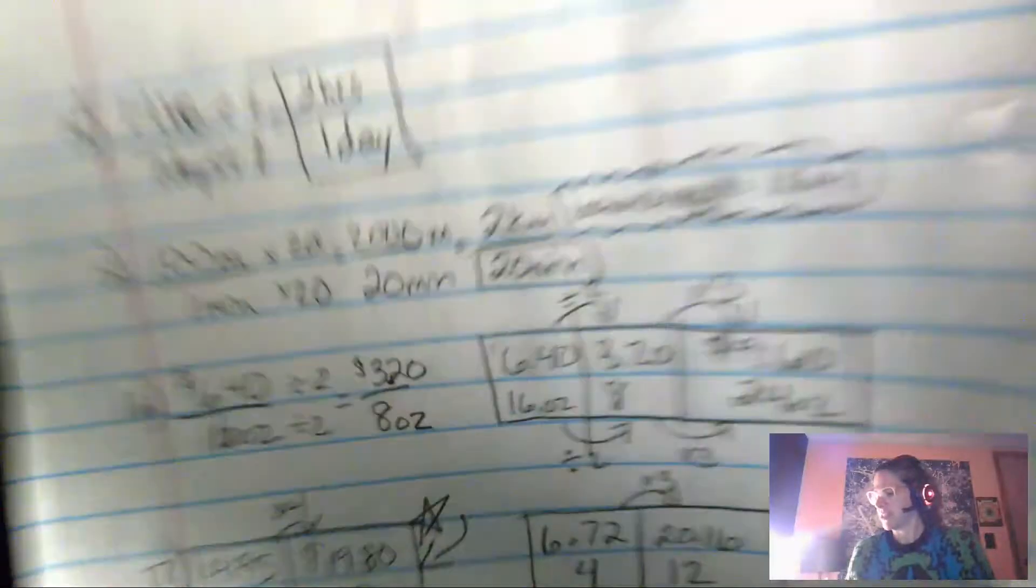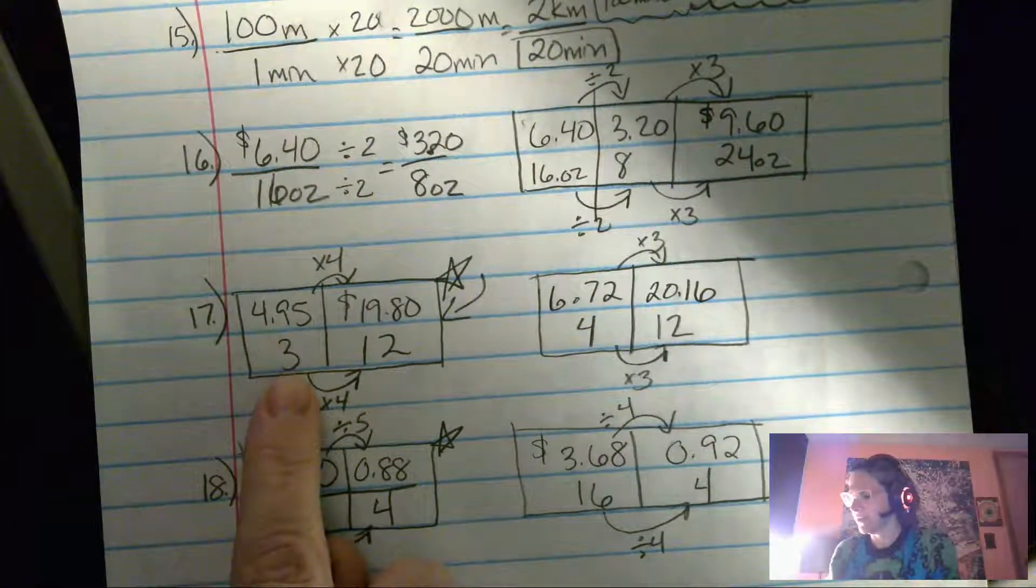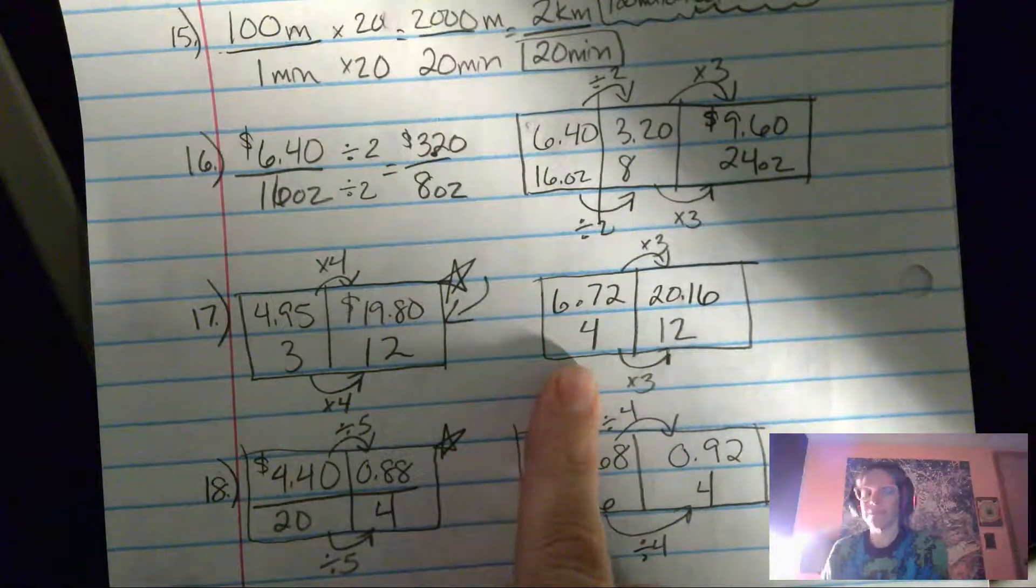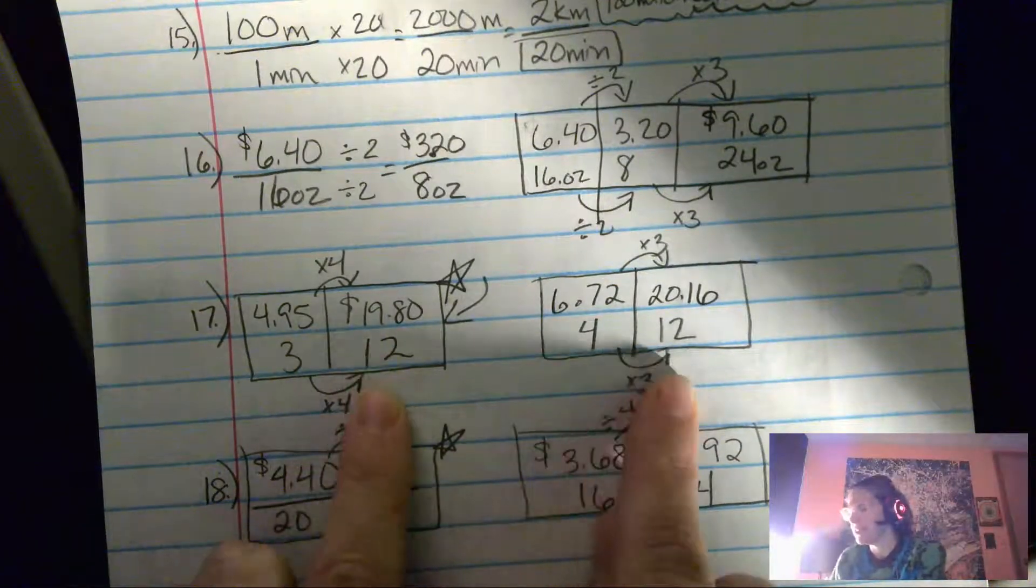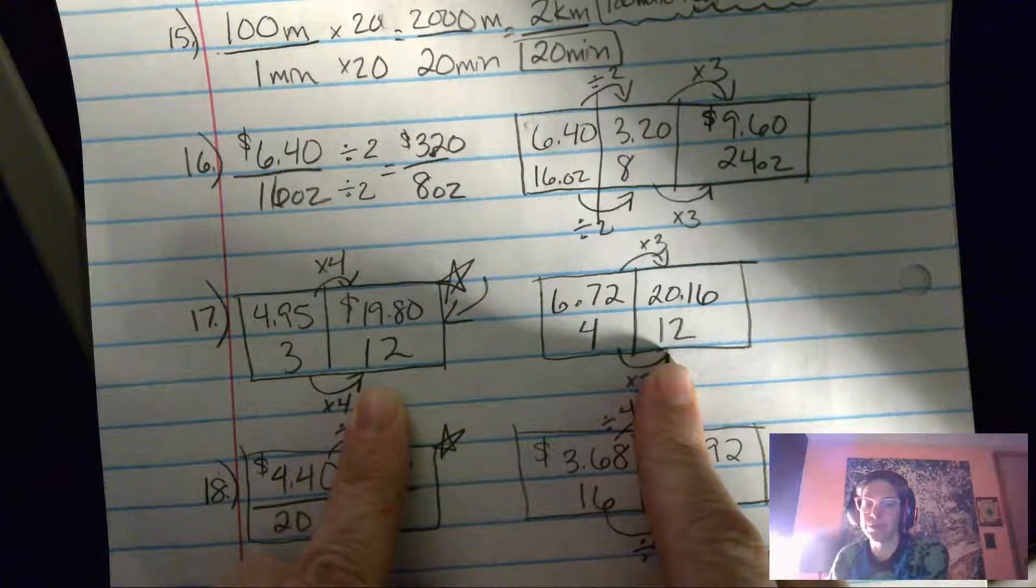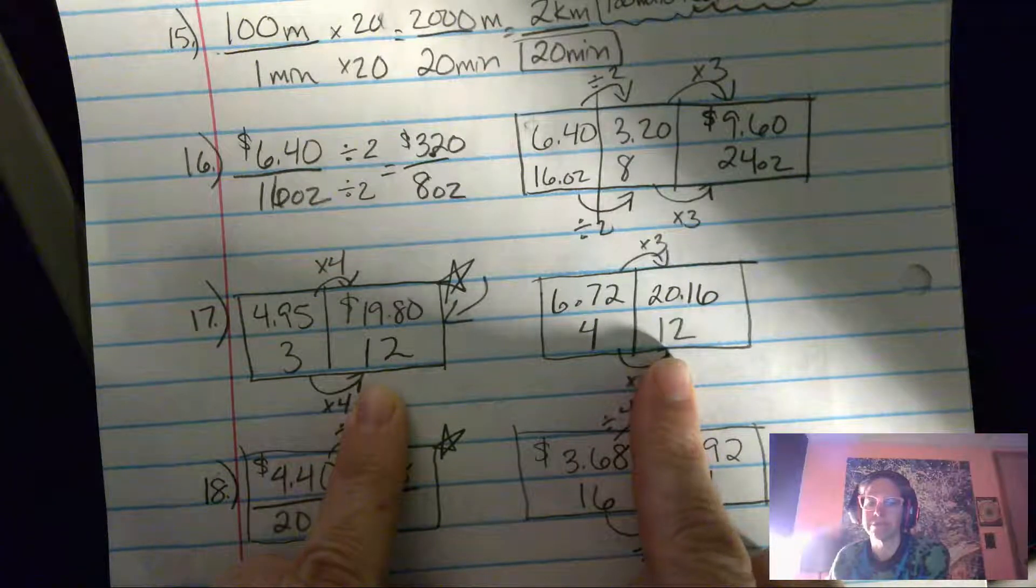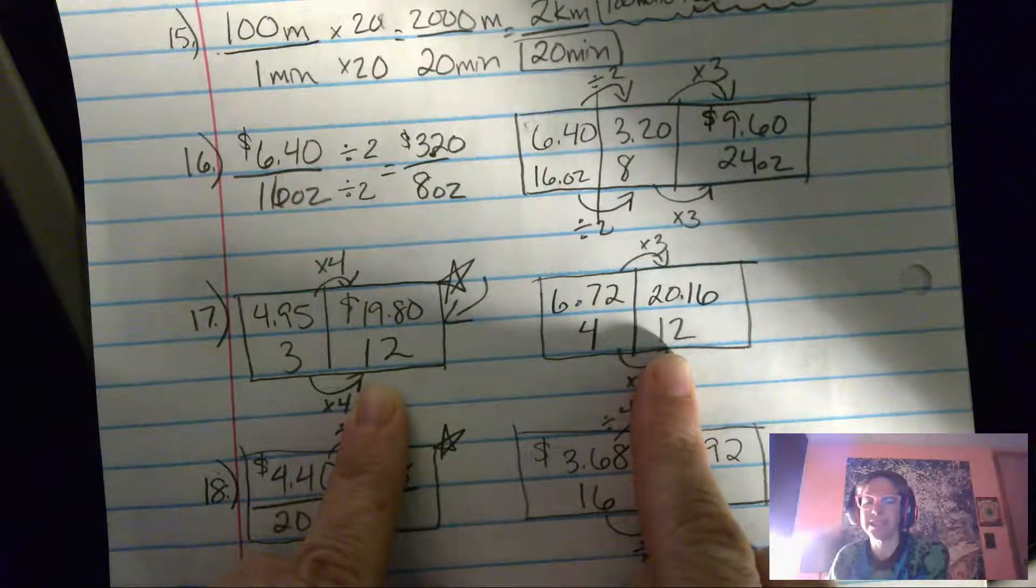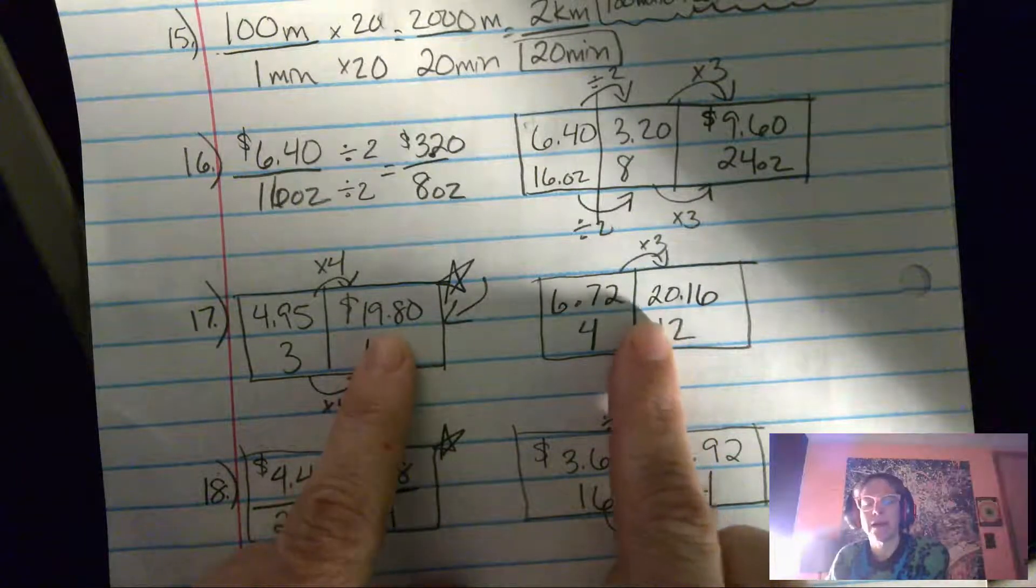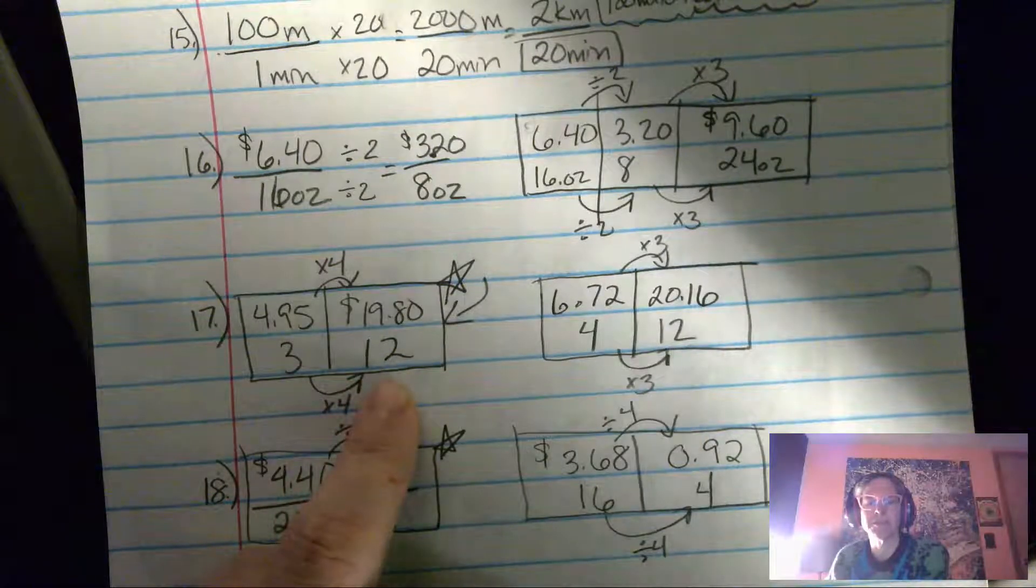Number 17 asks which one's the better deal? $4.95 for three sandwiches or $6.72 for four sandwiches. I made both of these into 12 sandwiches. How much are 12 sandwiches? I could have done it the other way and just broke it down to unit rate, but I didn't, just to show you guys that there are lots of different ways that you could do unit rates or compare rates in math. So this is the better deal, the $4.95 for three sandwiches.